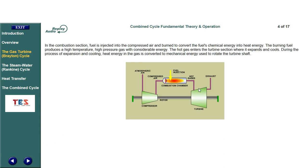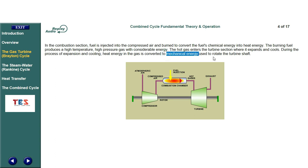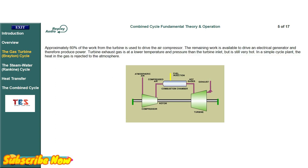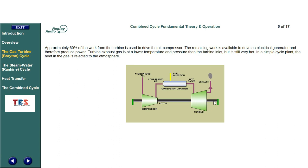In the combustion section, fuel is injected into the compressed air and burned to convert the fuel's chemical energy into heat energy. The burning fuel produces a high temperature, high pressure gas with considerable energy. The hot gas enters the turbine section where it expands and cools. During the process of expansion and cooling, heat energy in the gas is converted to mechanical energy used to rotate the turbine shaft. Approximately 60% of the work from the turbine is used to drive the air compressor. The remaining work is available to drive an electrical generator and therefore produce power. Turbine exhaust gas is at a lower temperature and pressure than the turbine inlet, but is still very hot. In a simple cycle plant, the heat in the gas is rejected to the atmosphere.